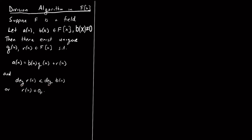Let's go through a few examples. For the first example, we'll look at a(x) = 2x³ + x² + x + 1, and b(x) = x² + 3x + 1, and let's say this is taking place in Q[x].